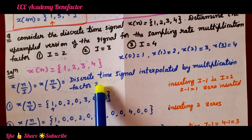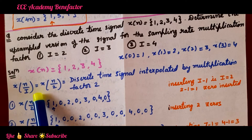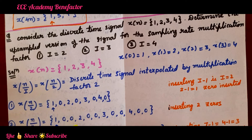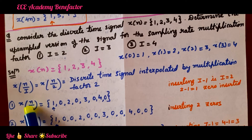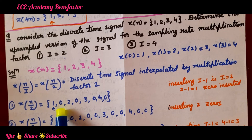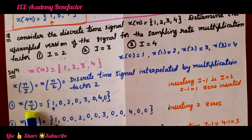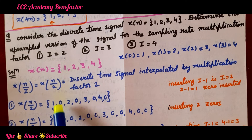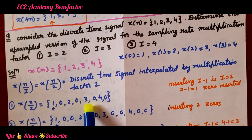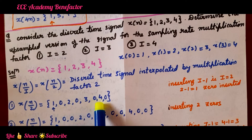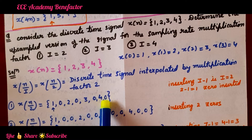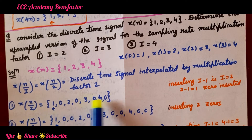In interpolation or upsampling, we insert I minus 1 zeros after every sample. With I equal to 2, we insert 2 minus 1 equals 1 zero after every sample. From the given sequence {1, 2, 3, 4}, x(n/2) = {1, 0, 2, 0, 3, 0, 4, 0}.